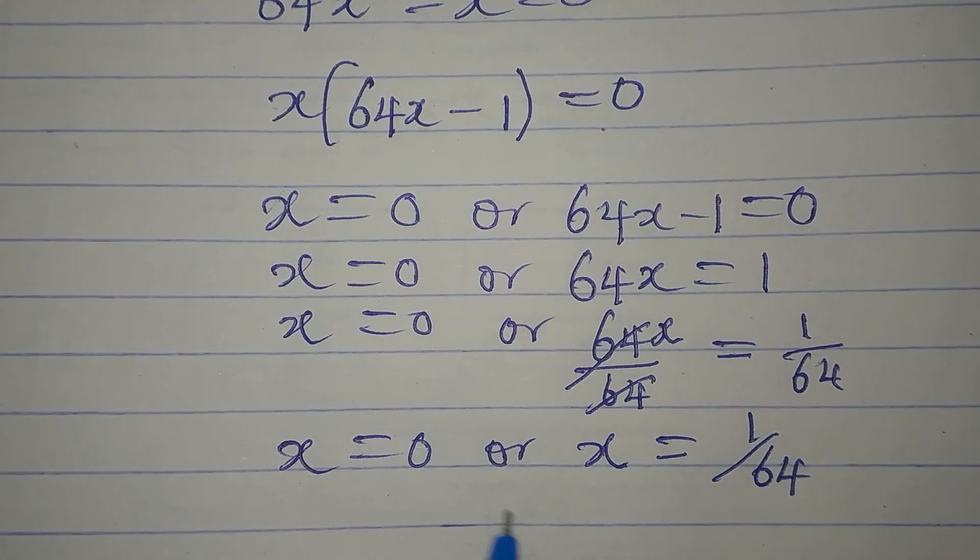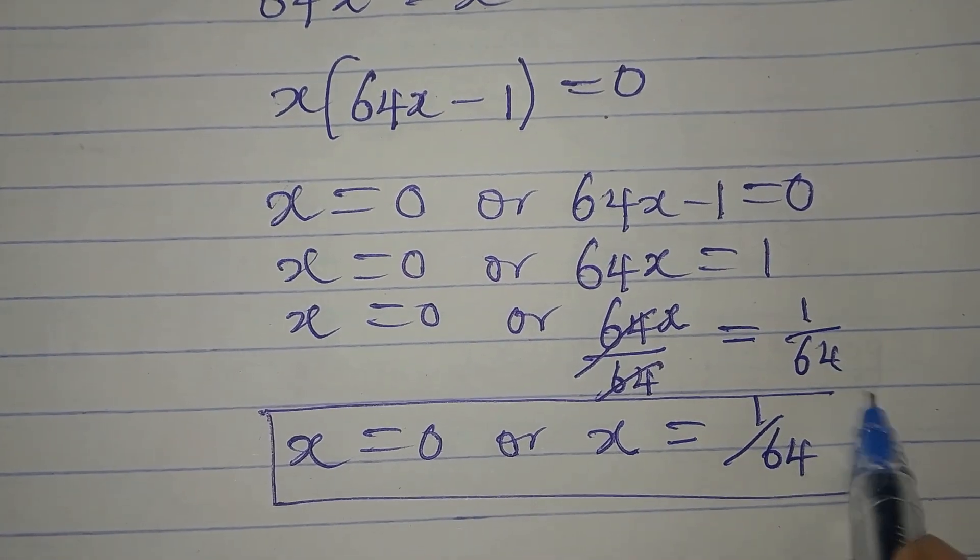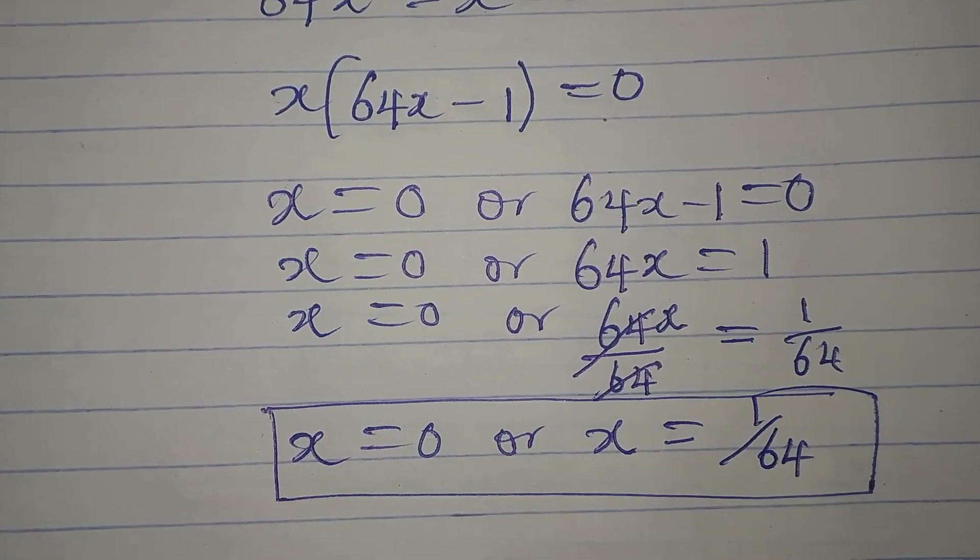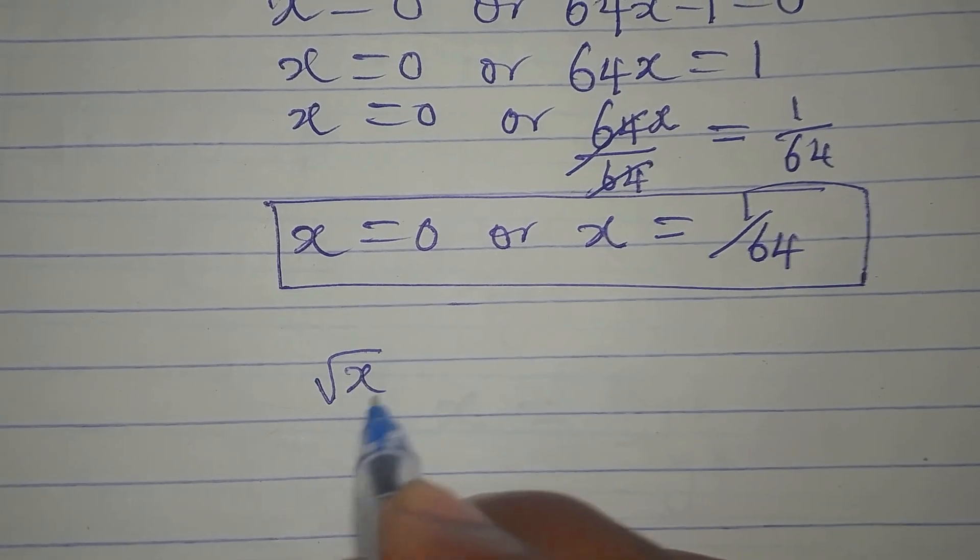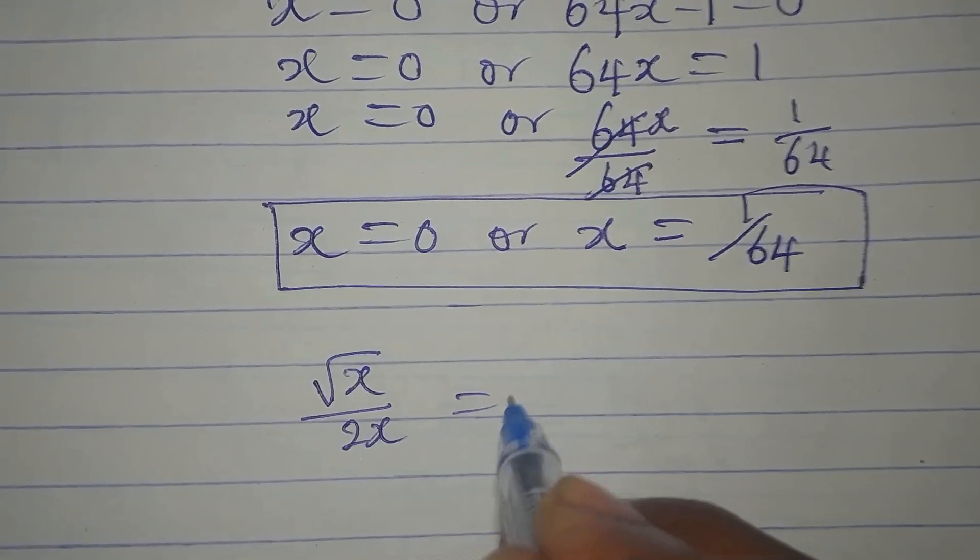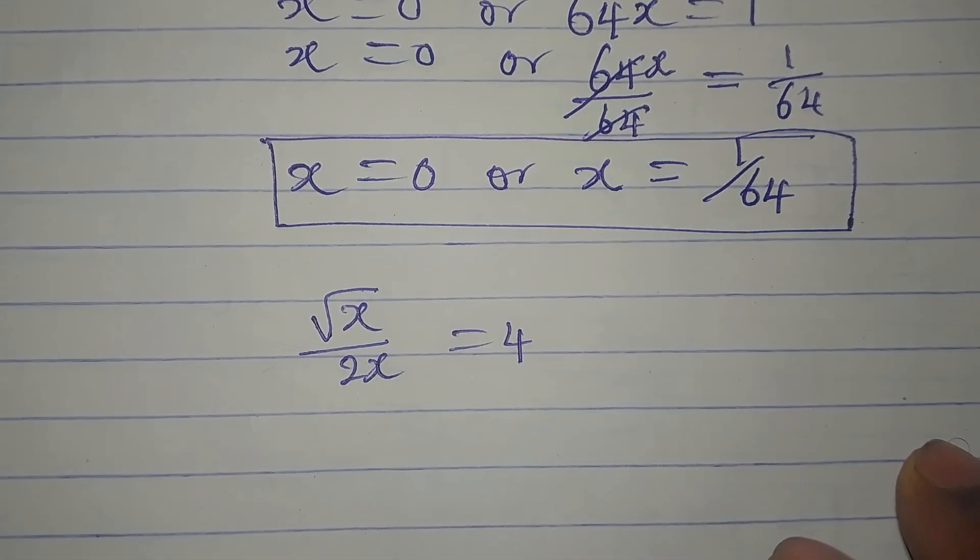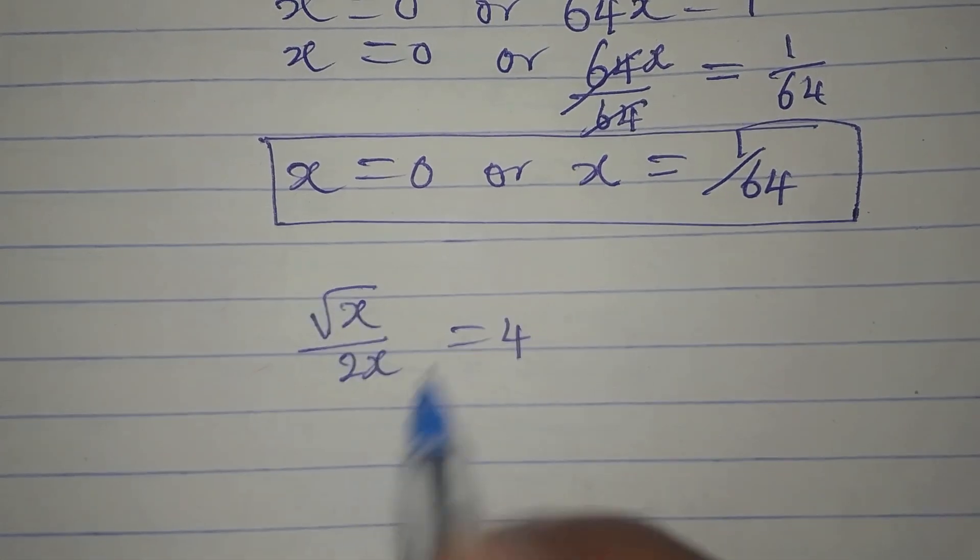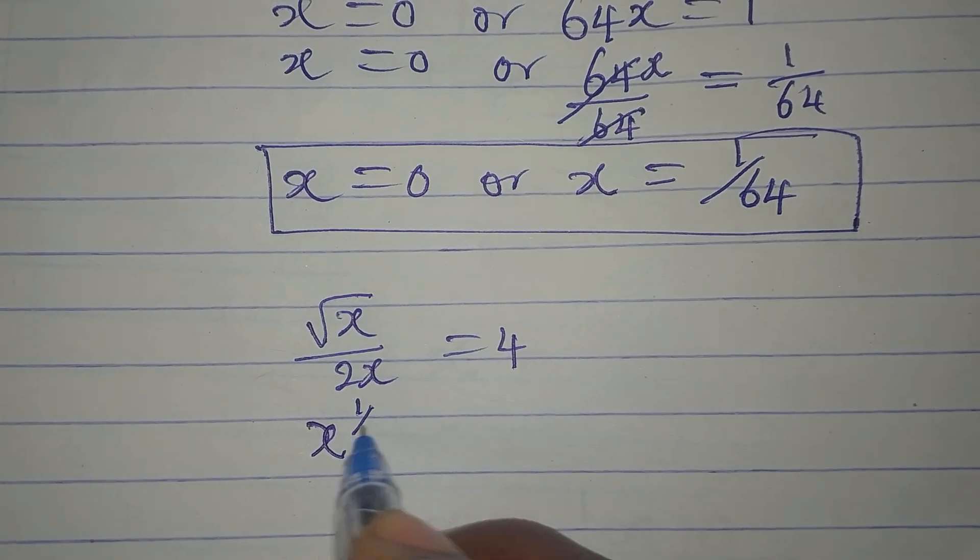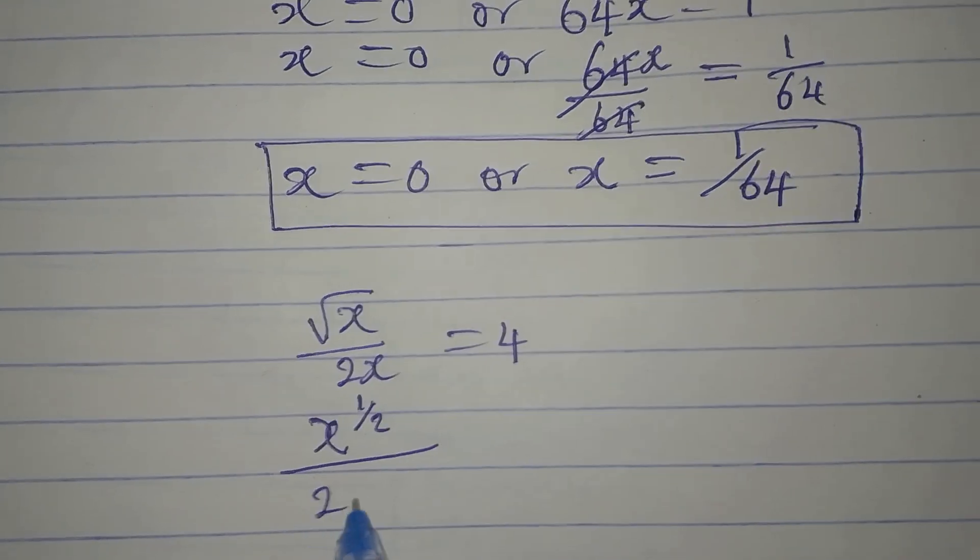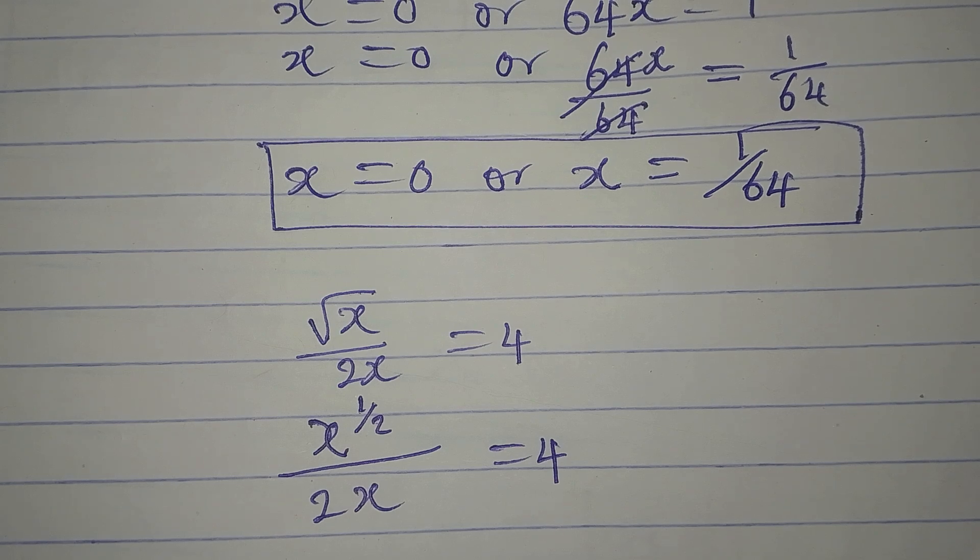We are having two solutions from here. Now let's use another method for this. Imagine we have square root of x over 2x equals 4 and we do not want to cross multiply. We will now rearrange what we have here to get x to the power of 1 over 2, all over 2x equals 4. Now let's continue from here.